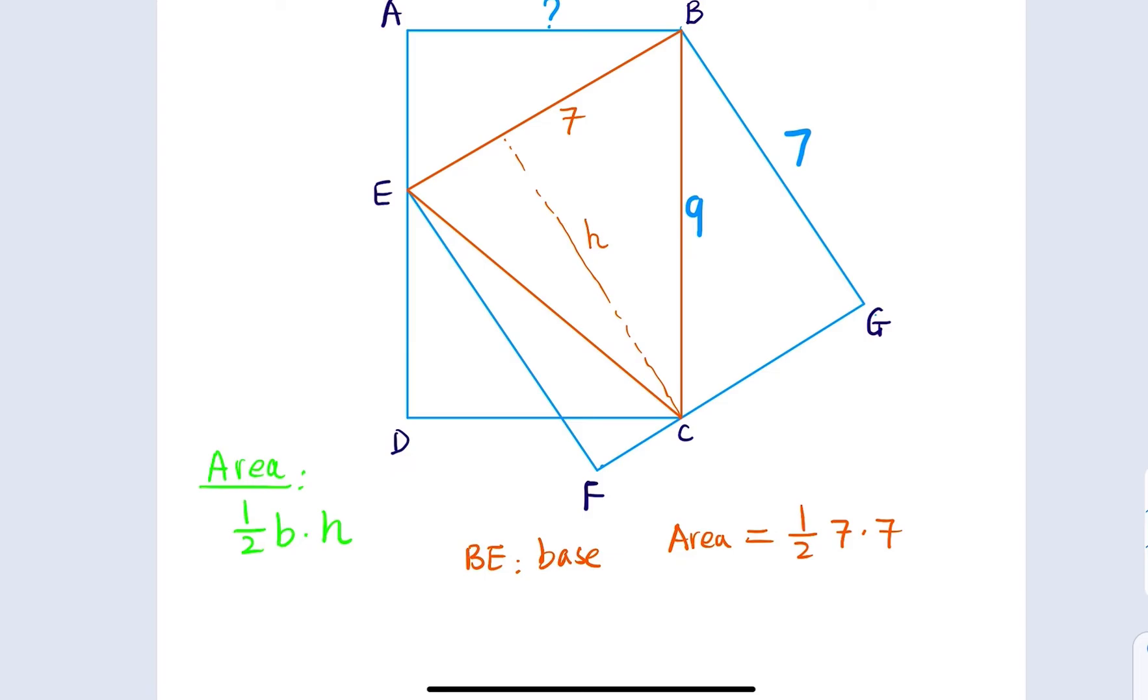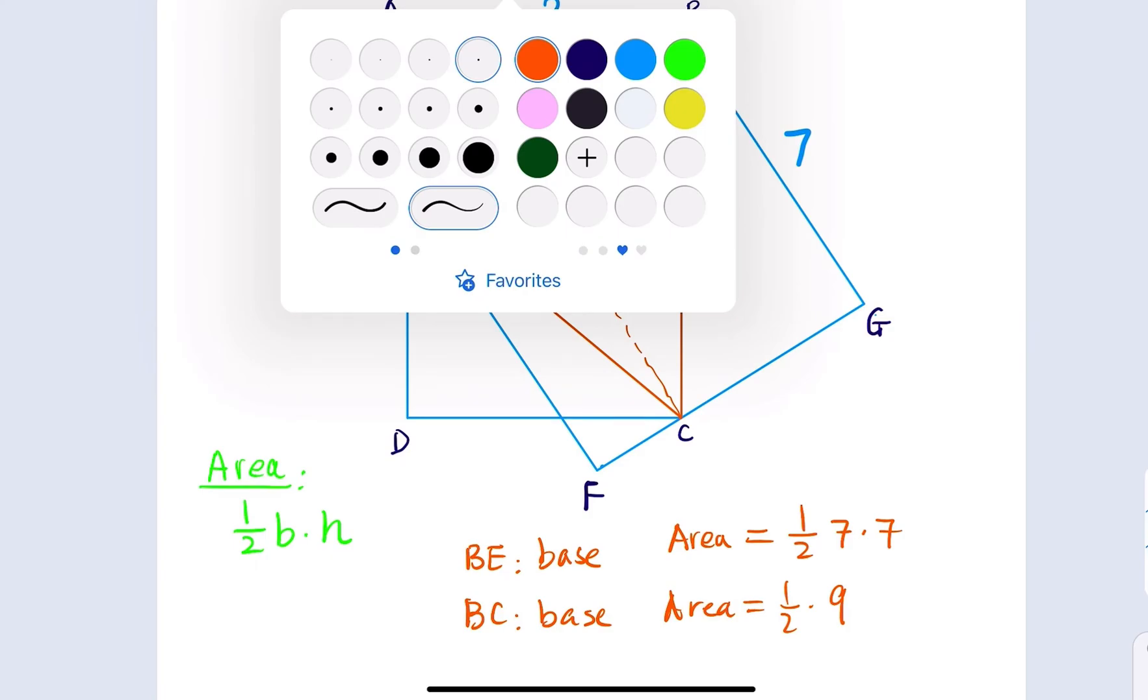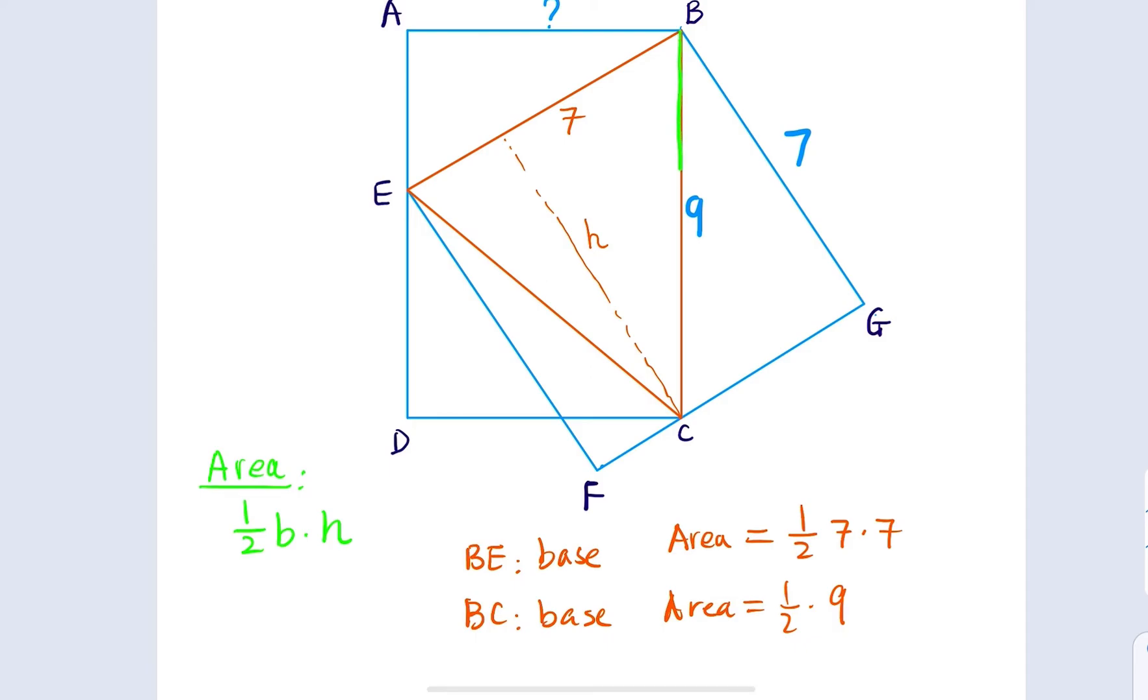You can try to view this triangle with BC as a base. The area would equal one half times base. BC is going to be nine. What is the height if this is the base? BC is the base, and for this triangle the height would be this one. What is the height? The height is x, what we're trying to find, so nine times x.